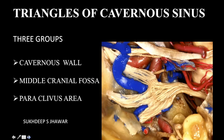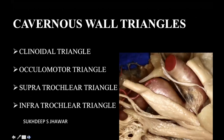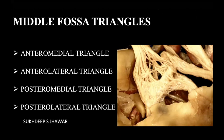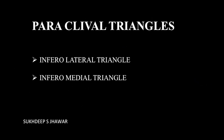For the triangles in summary, we have three groups: cavernous sinus triangles, middle fossa triangles, and paraclival triangles. These cover almost the whole of the middle fossa and some parts of the anterior and posterior cranial base. The four cavernous sinus triangles are: clinoidal, oculomotor, supratrochlear, and infratrochlear. Once you are infratrochlear, you are outside the cavernous sinus and in the middle fossa. The four middle fossa triangular areas are: anteromedial, anterolateral, posterolateral, and posteromedial. Then we have two paraclival triangles: inferolateral and inferomedial.